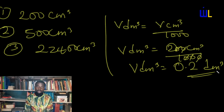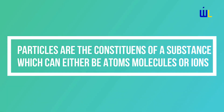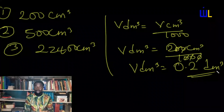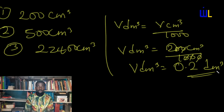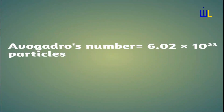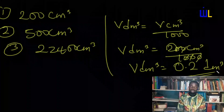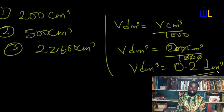The fourth quantity of measurement is number of particles. Particles are the constituents of a substance, and there are three particles of matter in chemistry: atoms, molecules, and ions. Whenever you are looking at the number of these three particles in a substance, you are measuring by number of particles. According to Avogadro's constant, the number of particles in one mole of a substance equals 6.02 × 10²³ particles, which is known as Avogadro's constant.